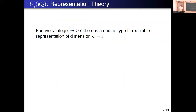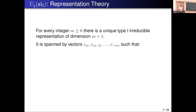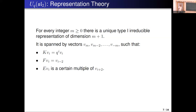Representation theory: for every integer M greater than or equal to 0, there is a unique type 1 irreducible representation of dimension M plus 1. Classically the highest weight would be M; here it will be Q to the M. It is spanned by vectors V_m, V_{m-2}, down to V_{-m}. K acts on V_i by the scalar Q to the i, F goes down and E goes up with some scalars. There was a lecture by Junkun yesterday, so I don't need to write the scalars. These are basically the only modules with positive weights — that's type 1.